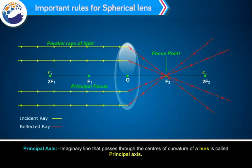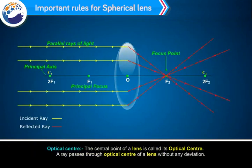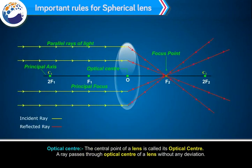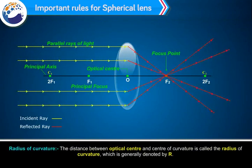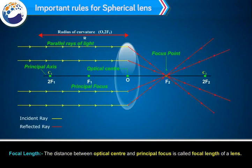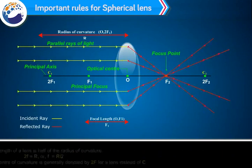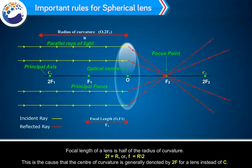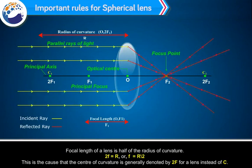The imaginary line that passes through the centres of curvature of a lens is called the principal axis. The central point of a lens is called its optical centre. A ray passing through the optical centre of a lens passes without any deviation. The distance between the optical centre and the centre of curvature is called the radius of curvature, denoted by R. The distance between the optical centre and the principal focus is called the focal length. Focal length is half of the radius of curvature, that is, f = R/2, or 2f = R. Hence, the centre of curvature is generally denoted by 2f for a lens instead of C.